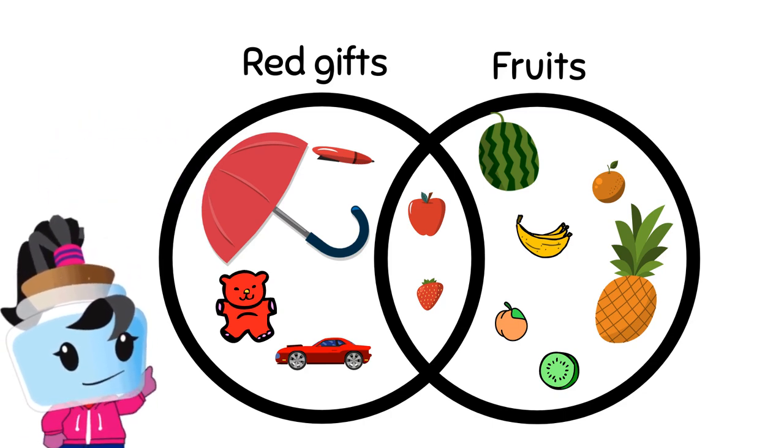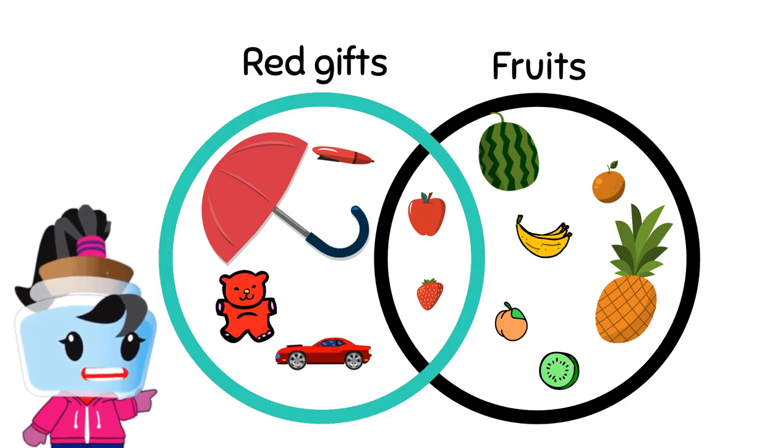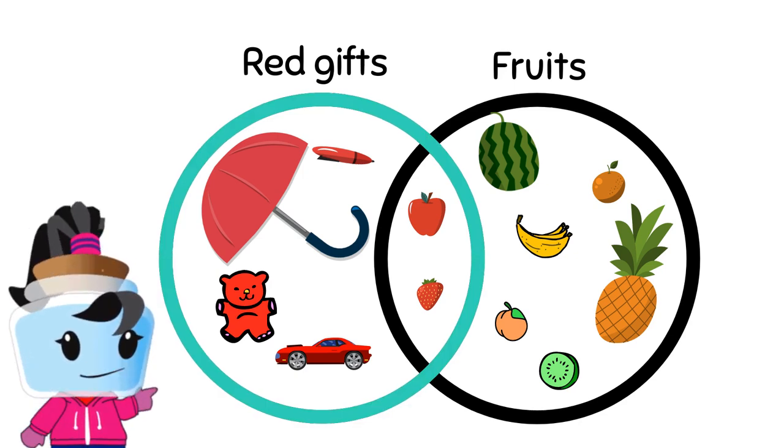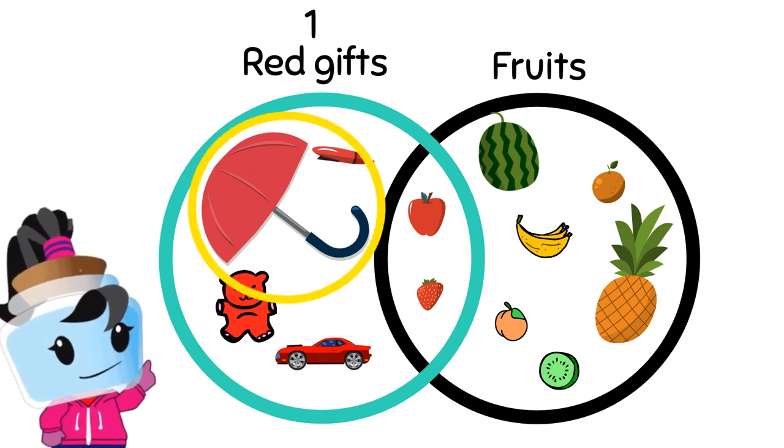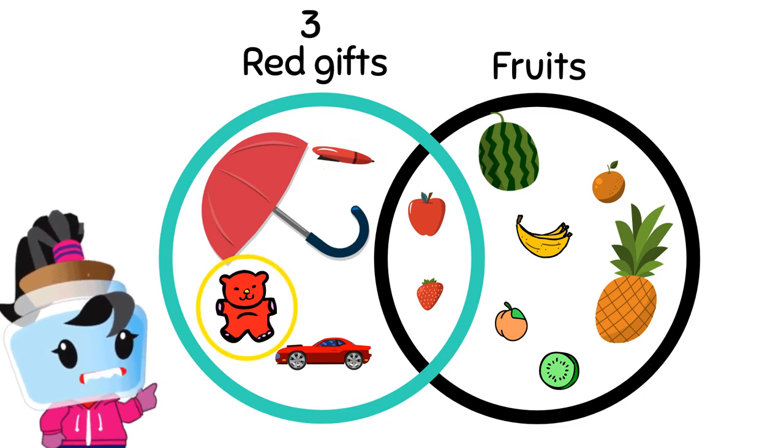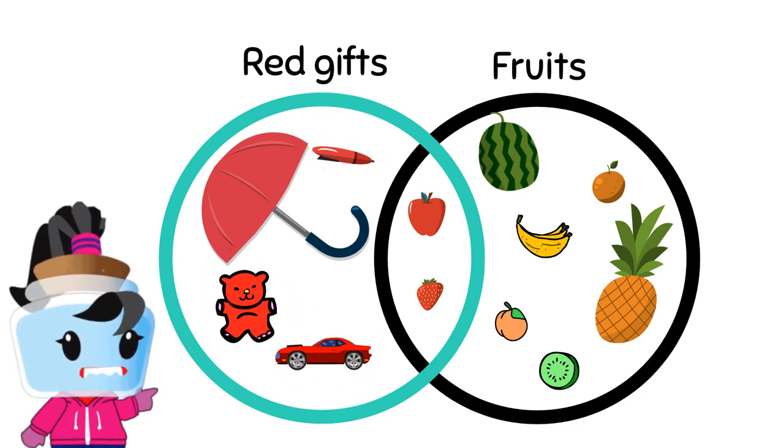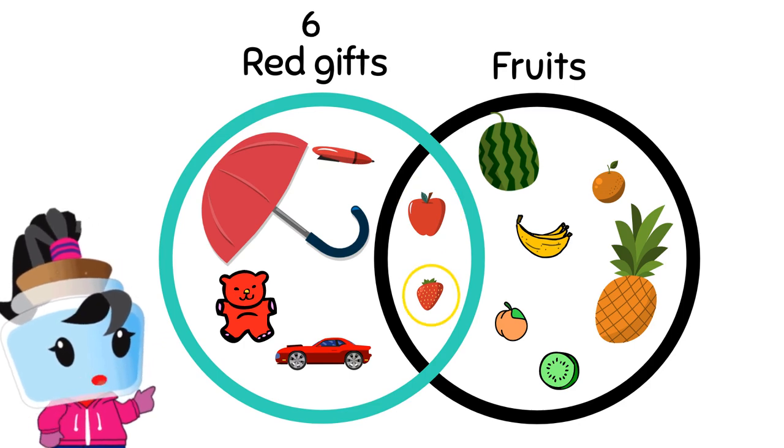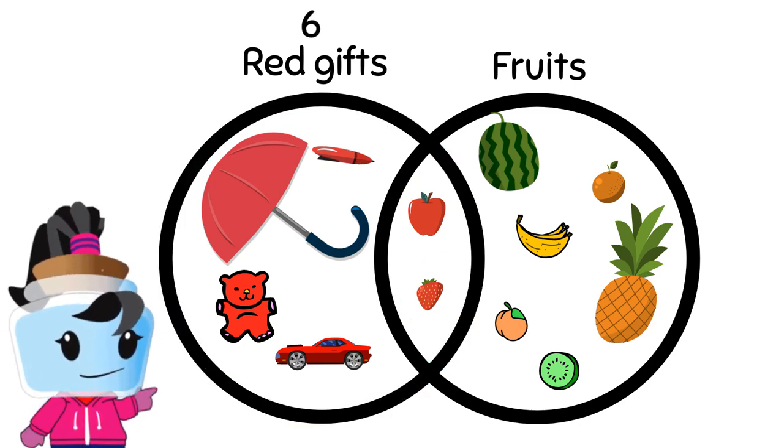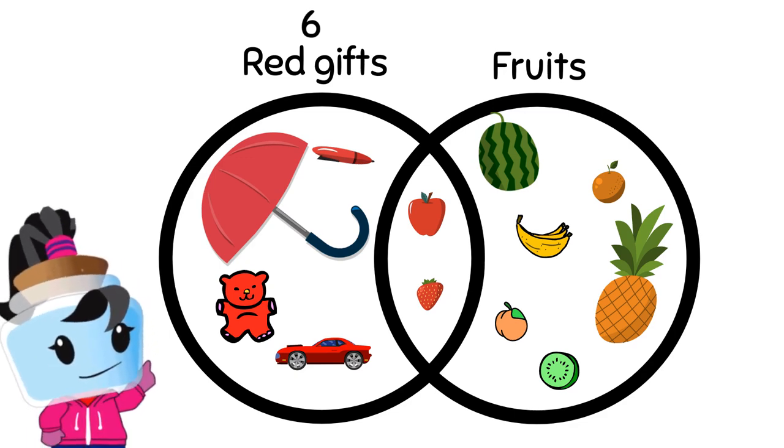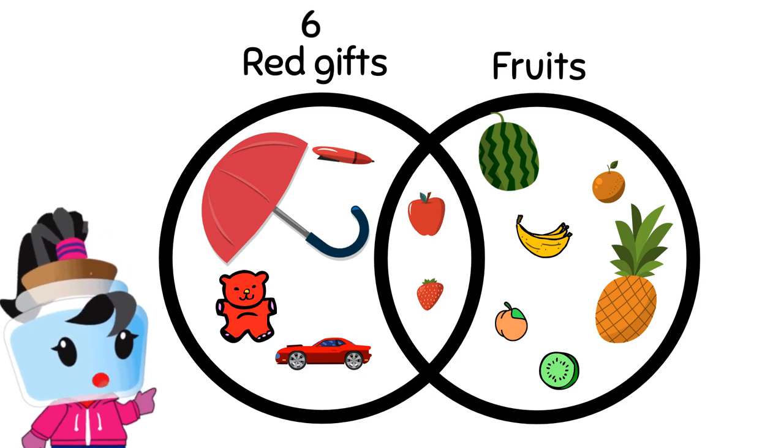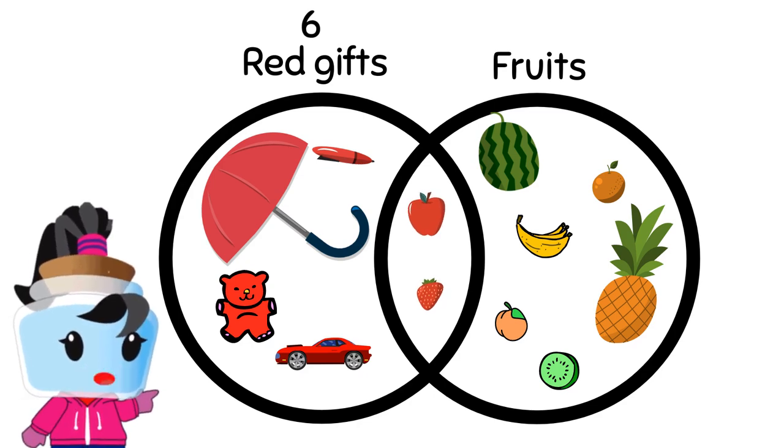Let's count how many presents are red by counting the items inside the circle for red gifts. One, two, three, four, five, six. Six red gifts. Note that we had to count the apple and strawberry as well, since they're also red.